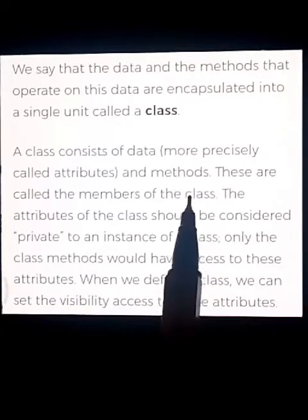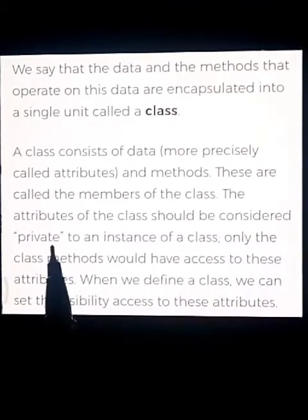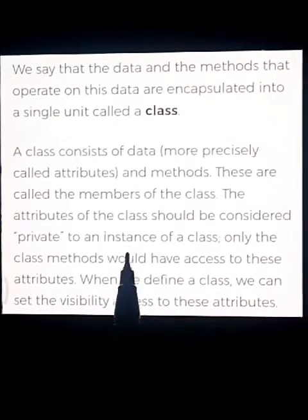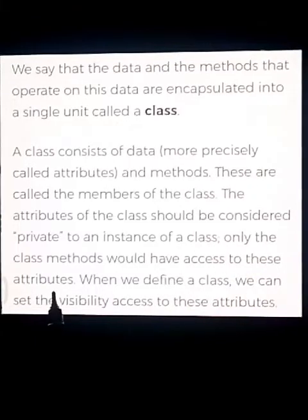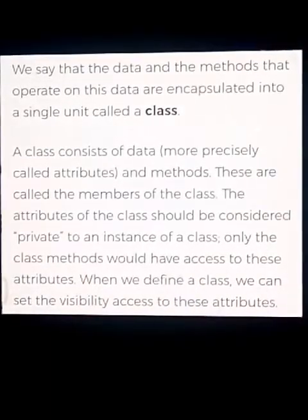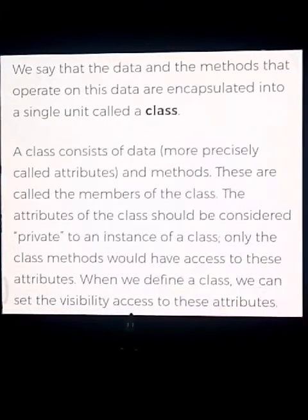The attributes of the class should be considered private. Only the class methods would have access to these attributes. When we define the class, we will have public and private visibility specifiers, which control access. We will mention further examples in the future.